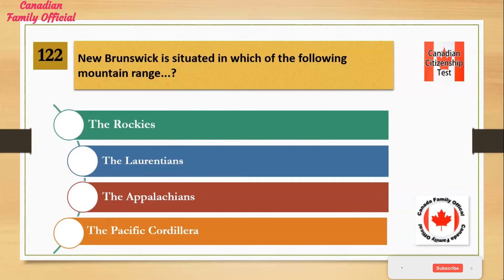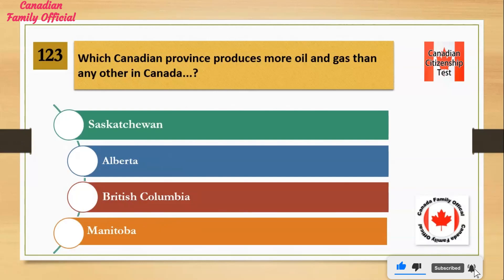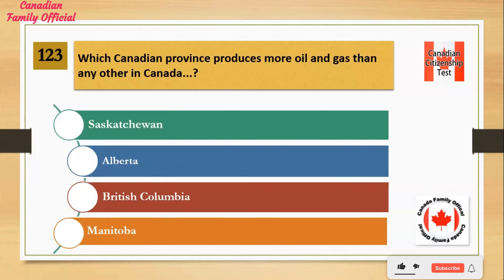Number 1: the Rockies. Number 2: the Laurentians. Number 3: the Appalachians. Number 4: the Pacific Cordillera. And the answer is the Appalachians.